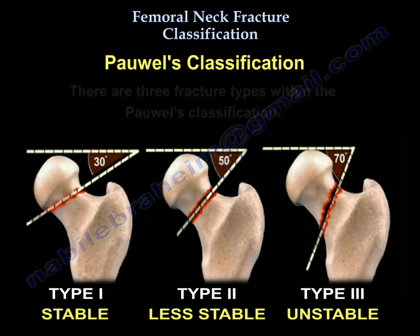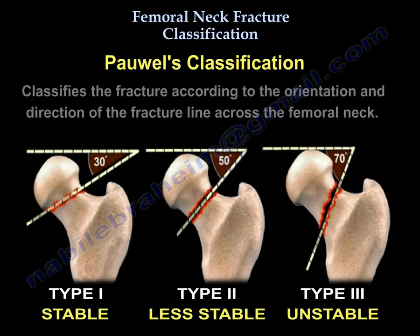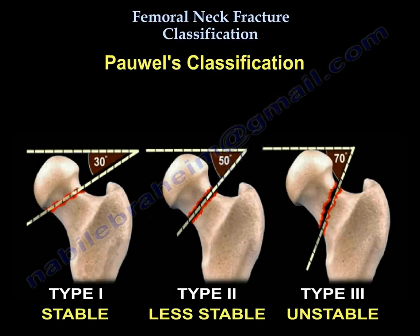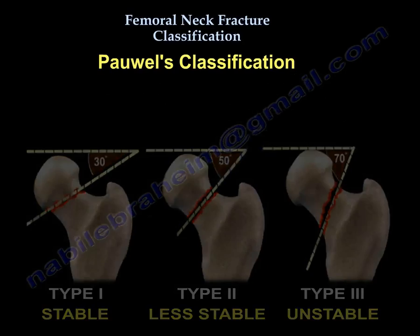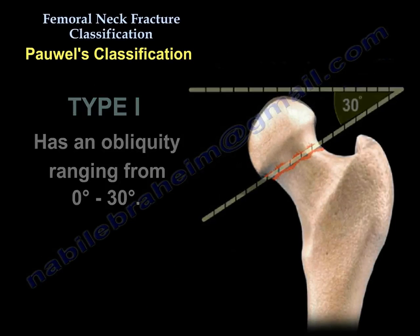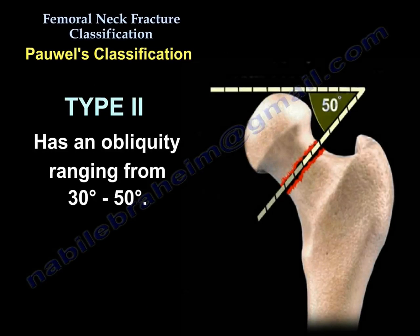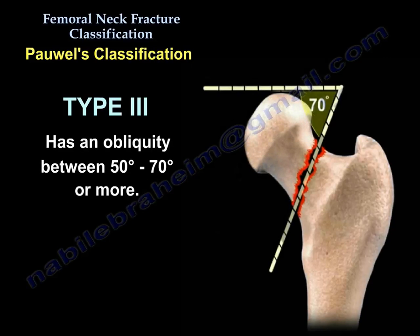Pauwels classification has three fracture types. It classifies the fracture according to the orientation and direction of the fracture line across the femoral neck, and relates to biomechanical stability. The more vertical the fracture, the more shear forces, and the higher the complication rate. Type 1 has an obliquity of less than 30 degrees. Type 2 has an obliquity from 30 to 50 degrees.